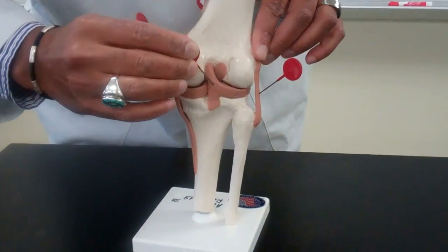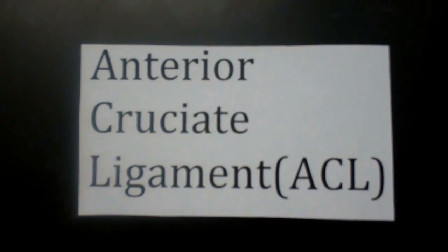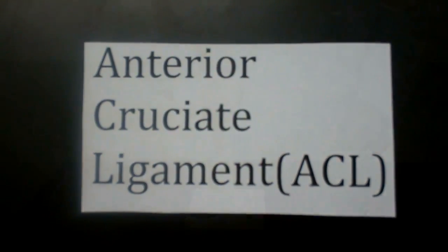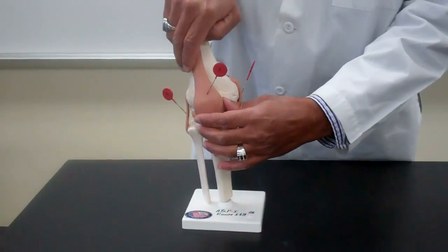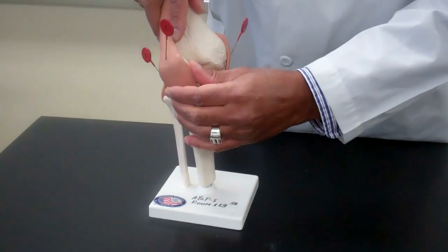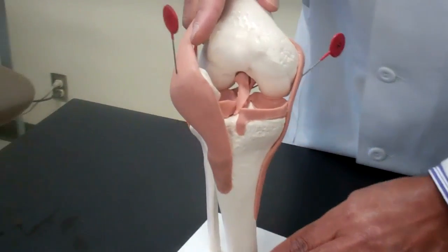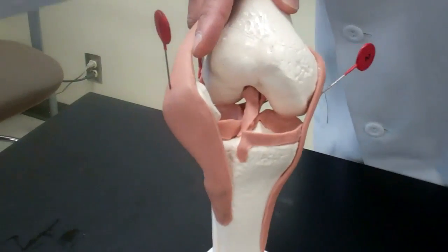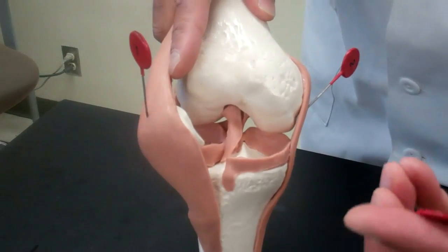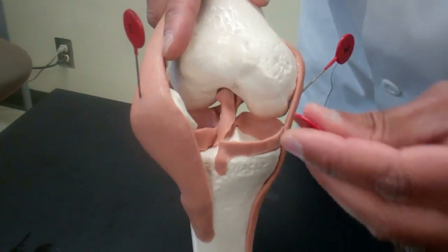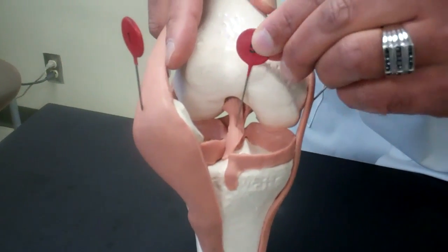Anterior cruciate ligament or ACL. For the ACL, we'll have to flex the knee and we will label that number five. This is the ACL ligament.